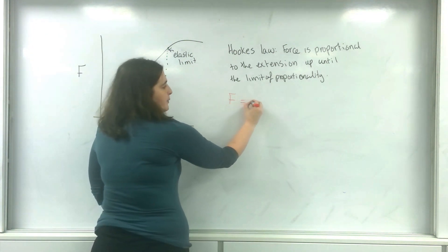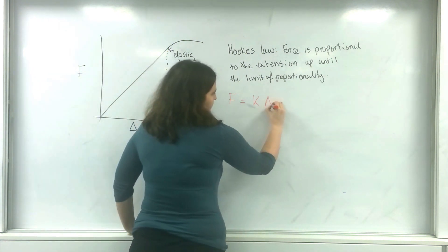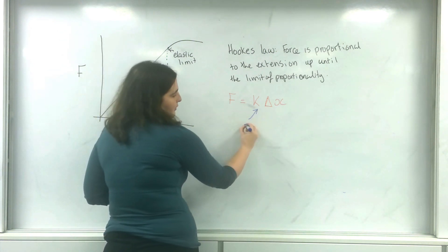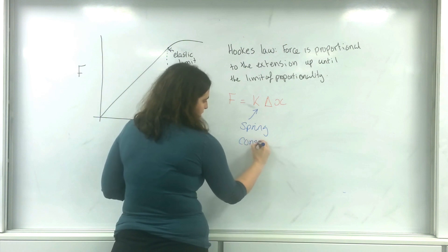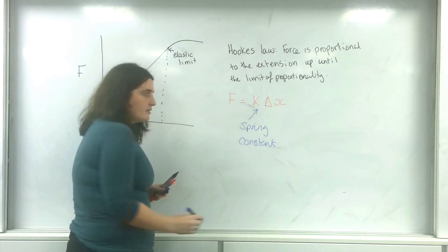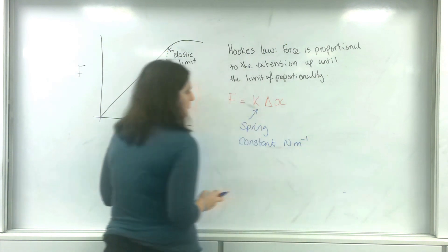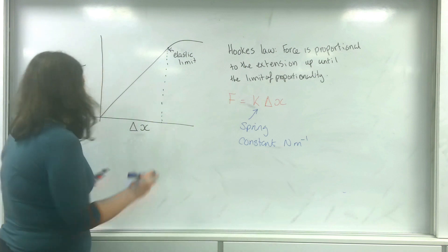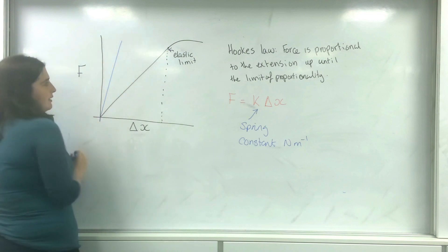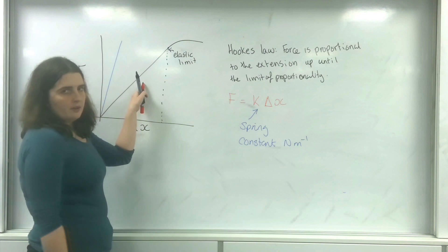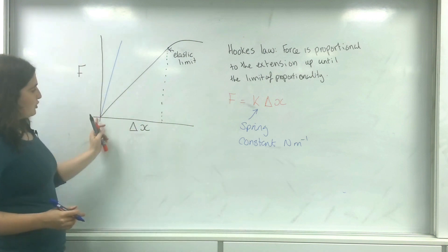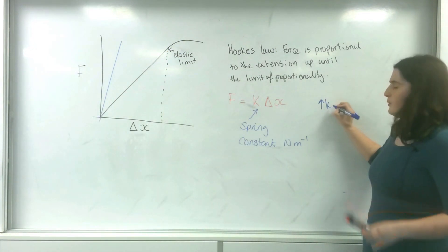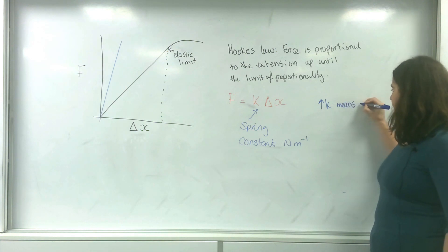This gives us F equals K delta X, where K is a constant known as the spring constant, and its units are newtons per metre. The bigger the spring constant, the steeper the line on the graph — so this spring here has a larger spring constant than this one. This means you require a lot of force to change its extension. A higher spring constant means a stiffer spring.